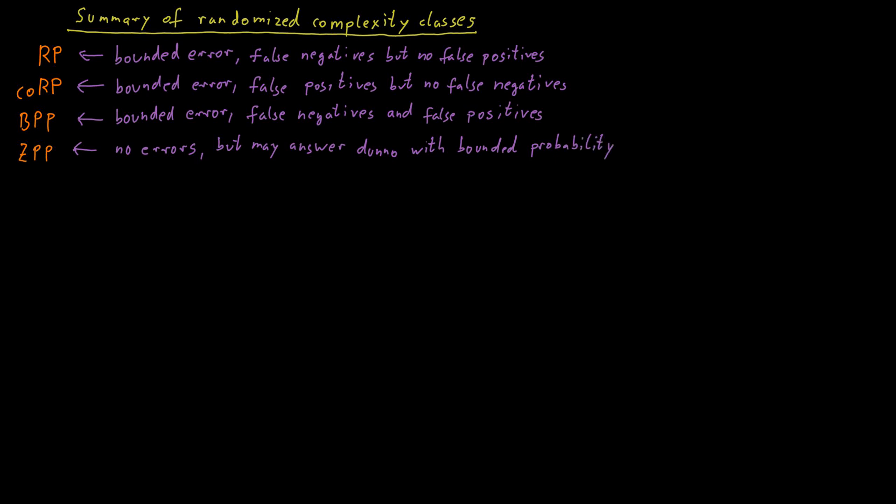We've discussed relationships between those classes. We've established that P is contained in RP, which is contained in NP, and that P is contained in CoRP, which is contained in CoRP. And we have seen that RP and CoRP are both contained in BPP, so therefore the union is also contained in BPP.